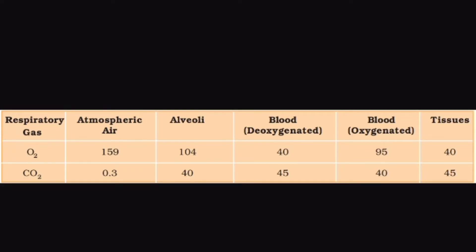The partial pressures of these two gases in the atmospheric air — as indicated by the data given in the table — clearly show a concentration gradient for oxygen from alveoli to blood and blood to tissues. Similarly, a gradient is present for carbon dioxide in the opposite direction, that is from tissues to blood and blood to alveoli.